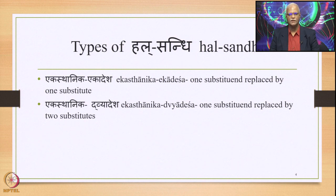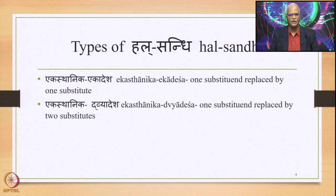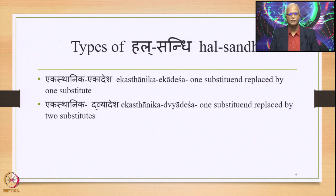Ekasthanika Ekadesha refers to the state where there is one substituent which is replaced by one substitute — Ekasthani and Ekadesha. Ekasthanika Dvyadesha refers to that state where there is one substituent which is replaced by two substitutes.